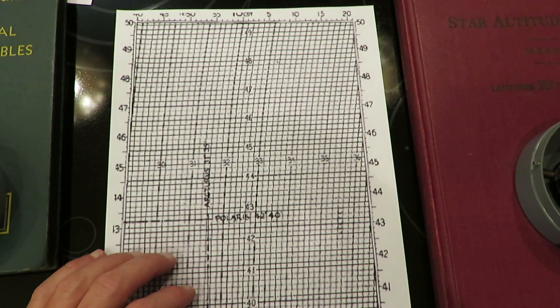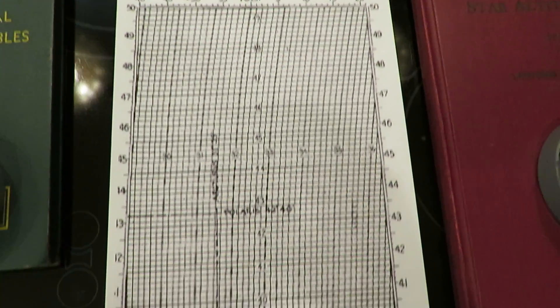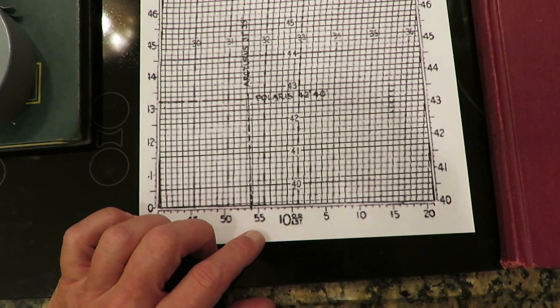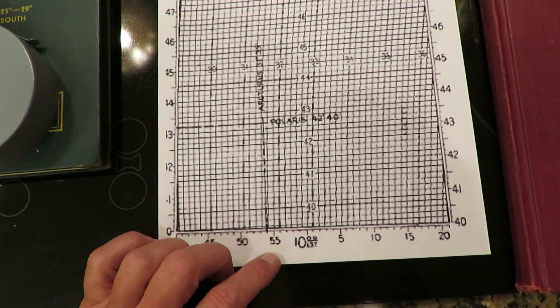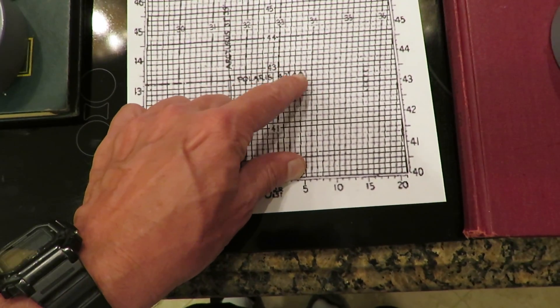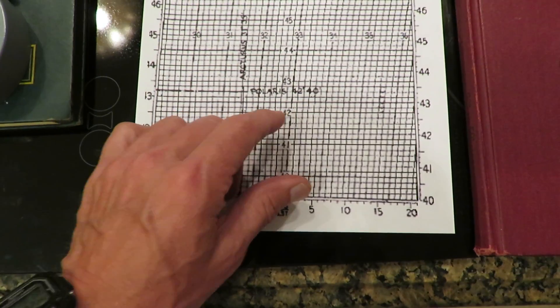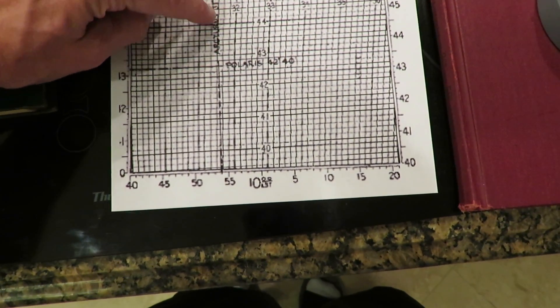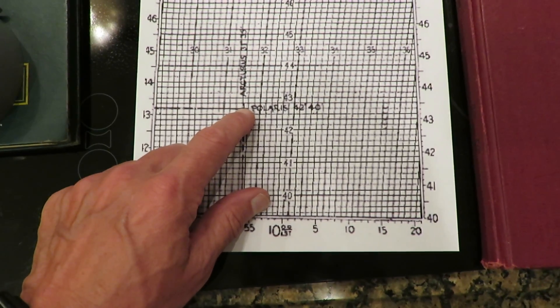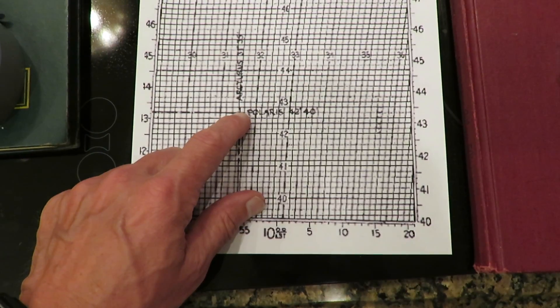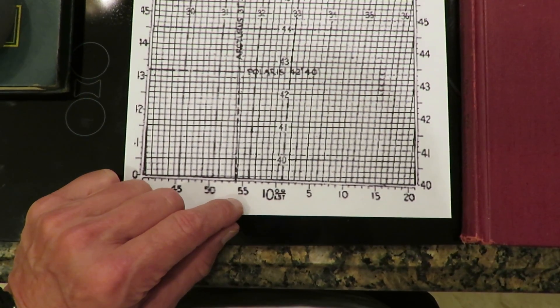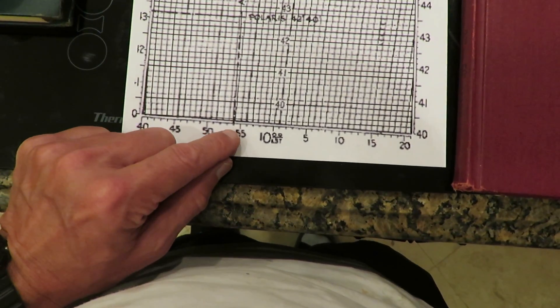To use the star altitude curves, we must first determine the local sidereal time, shown here at both the top and the bottom of this very early version of the chart. First we observe the angles using our sextant of two different stars and use the chart to see where their lines cross. In this example, Polaris is at 42 degrees 40 minutes, and Arcturus is 31 degrees 35 minutes, and this is where they cross. A line is then extended vertically up or down to the graph to determine the local sidereal time. We've extended this down to the bottom here, and the local sidereal time in this case is 0900 hours and 54 minutes.